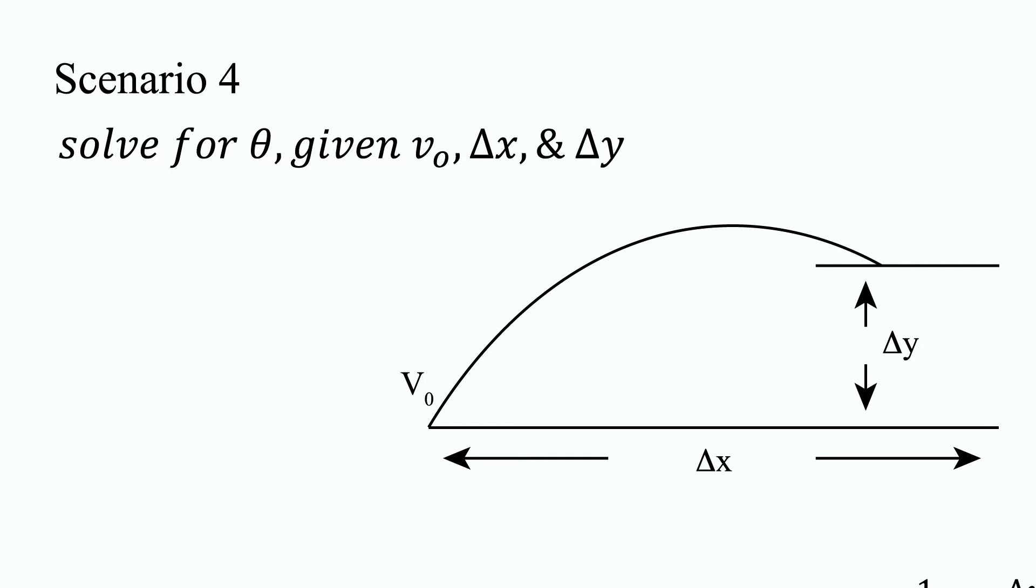In this fourth exercise, we will solve for theta given v naught, delta x, and delta y.